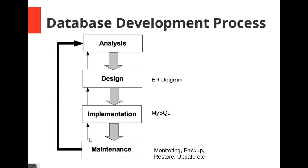In this section we will lastly talk about the database development process. A database is developed in four different stages. The first stage is analysis. For example, when a company asks you to design a database, the company will give you specifications or requirements for the kind of system they need. This information is known as the business requirement, and you are going to analyze it.